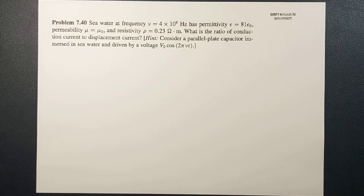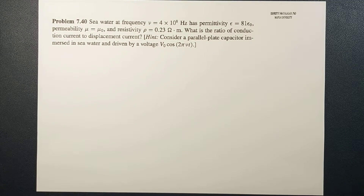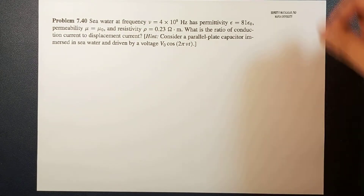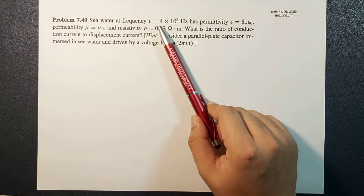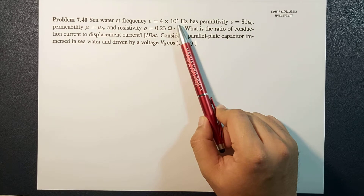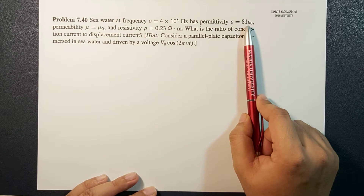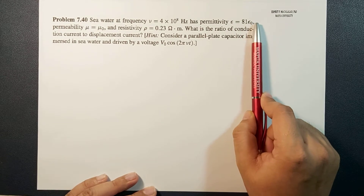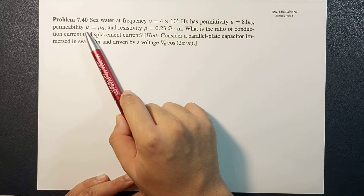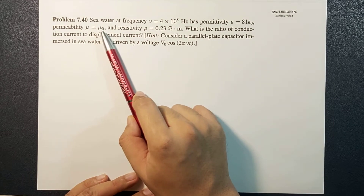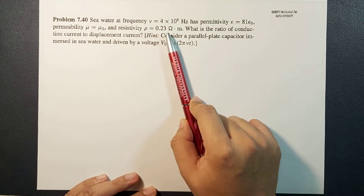What's up guys, it's me Sir Earnest and today we're going to solve problem 7.40 of Griffiths fourth edition. Seawater at frequency ν = 4×10⁸ Hz has permittivity ε = 81ε₀, permeability μ equal to the permeability of free space, and resistivity ρ = 0.23 ohm·meter.